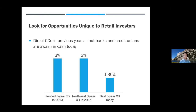In a previous round of low yields, the unique opportunities for retail investors were primarily in direct CDs from banks and credit unions. Back in 2013, we could get a 3% CD for five years from Pentagon Federal Credit Union. Back in 2015, I got a 3% three-year CD from Northwest Credit Union. But today, the best five-year CD is only paying 1.3%. Banks and credit unions no longer offer good deals because they have plenty of money and don't need to attract us with attractive rates.